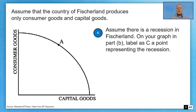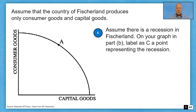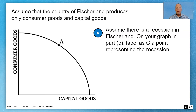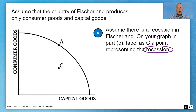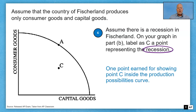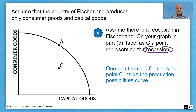Part C: assume there's a recession in Fisherland. On your graph in Part B, label as C a point representing the recession. A recession is that extended period of declining output and declining employment. How would we show that on a PPC? The recession is going to be an output level below the curve. Simply put point C anywhere inside the curve, and that's going to earn the point.